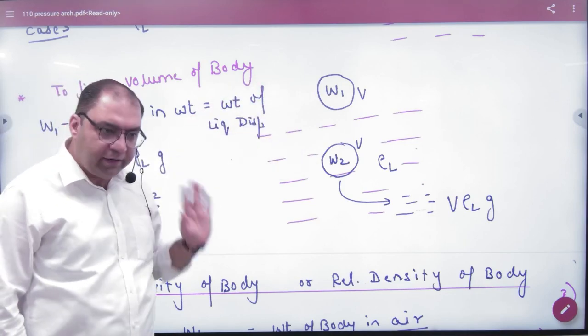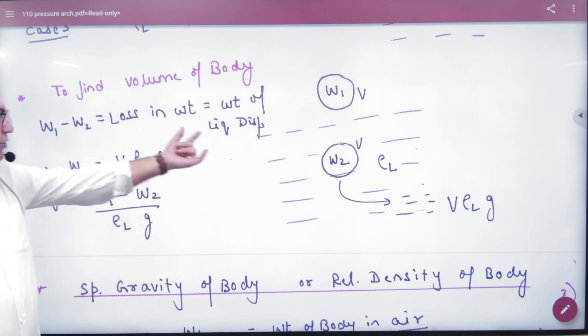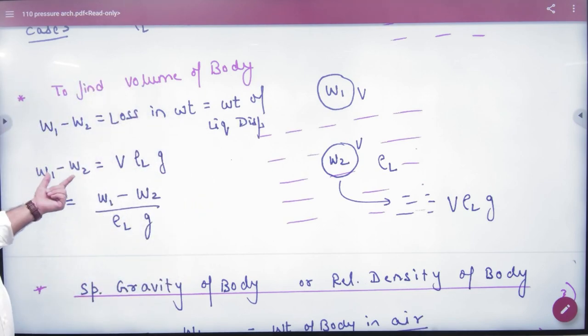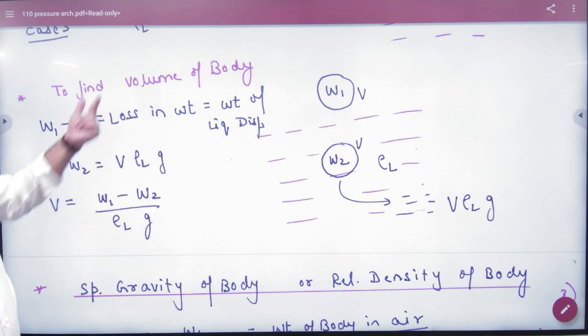There will be loss in weight. What is loss in weight? Upthrust or weight of liquid displaced? Loss in weight is W1 minus W2, which equals the weight of liquid displaced.